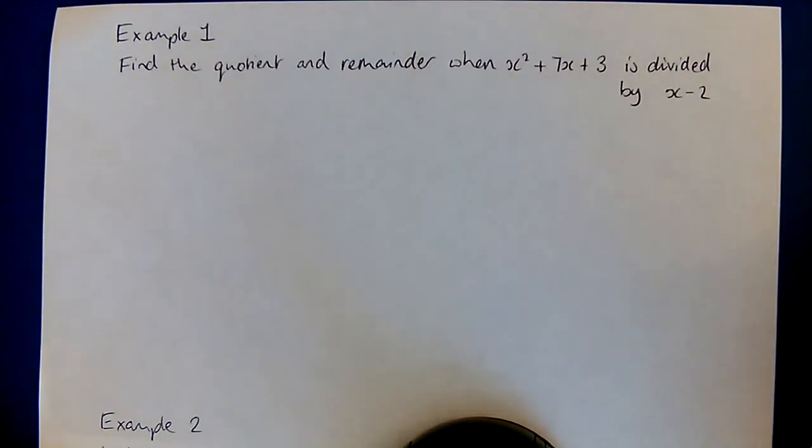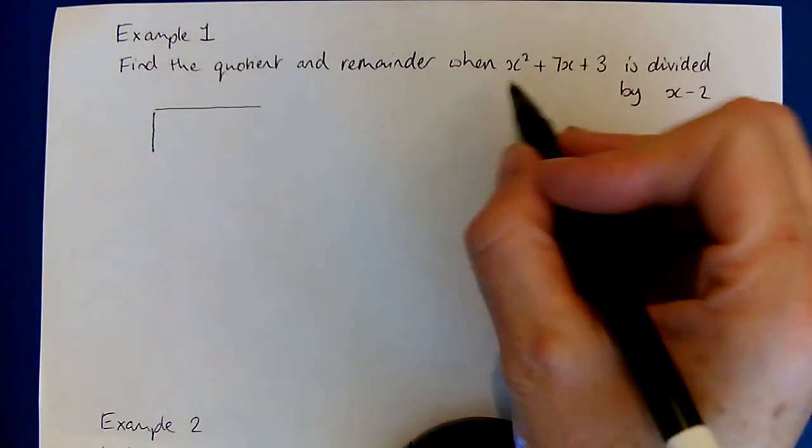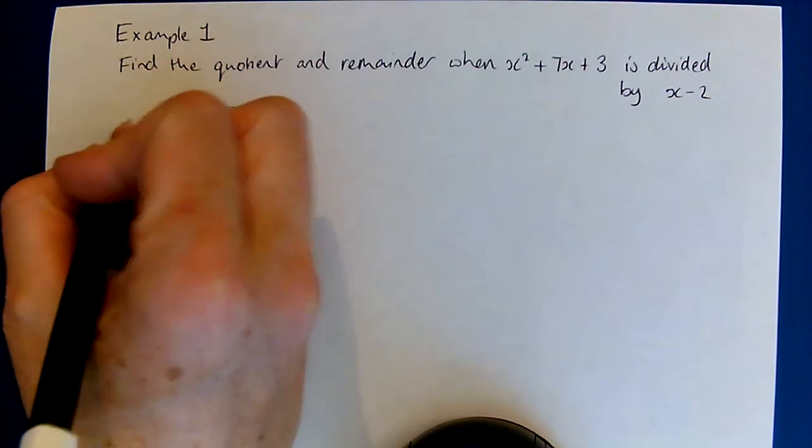I'm going to use the grid method to do the examples from today's lesson finding quotients and remainders. We want to divide this quadratic by x minus 2, so I'm going to set up my grid.